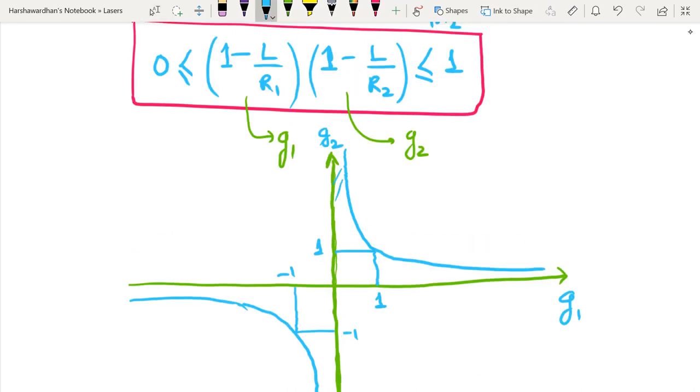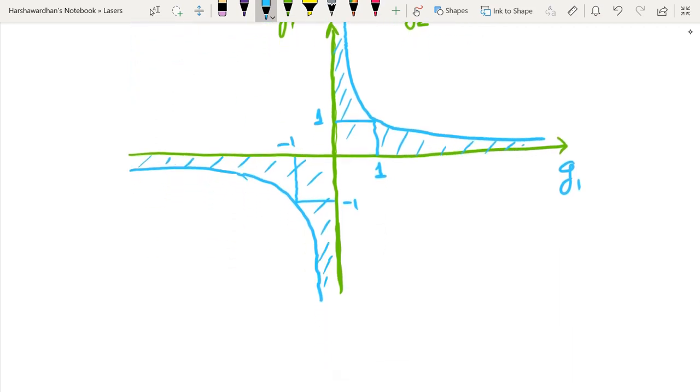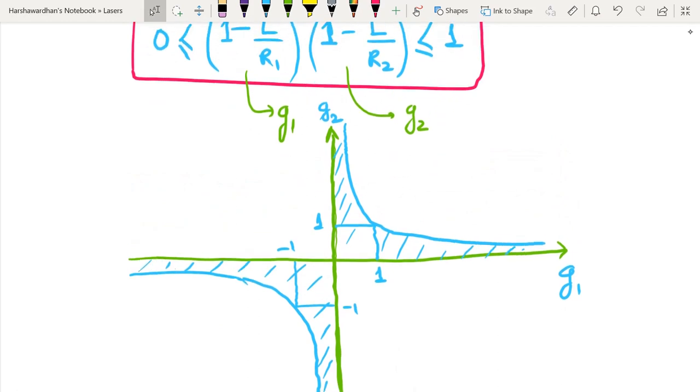That this hashed region, this is the stable region. That is, if I choose parameters which are contained within this hashed region, this is the shaded region. So these are stable. And every region outside this, every region outside is unstable.